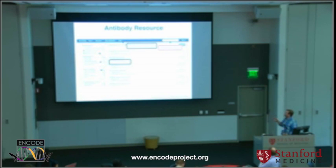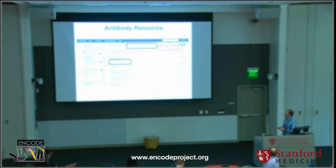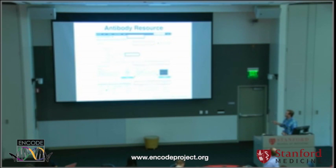The antibody resources are all available at the DCC site. There's a large number in a category called 'not pursued' — those are the antibodies that don't work very well. We think that information is just as important as the ones that are good, so you don't accidentally order a bad antibody. If you click on a particular antibody, you can see both the IP experiment and the RNAi knockdown experiment, and if there are data sets generated to date, you can access those directly on that site as well.